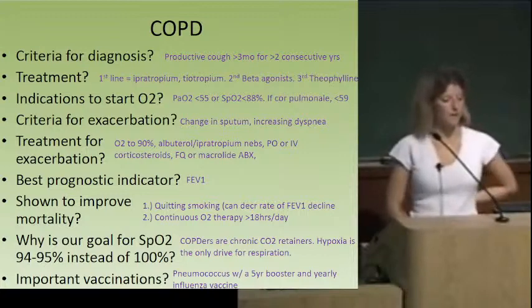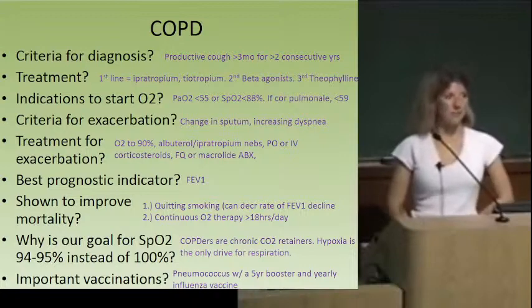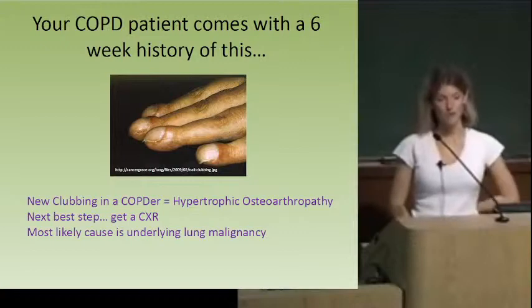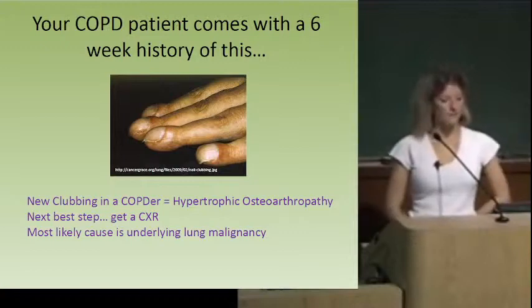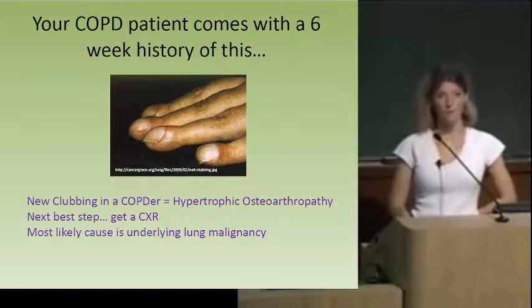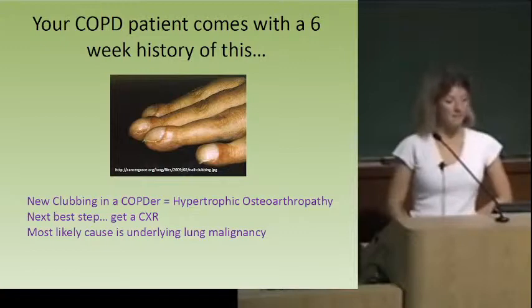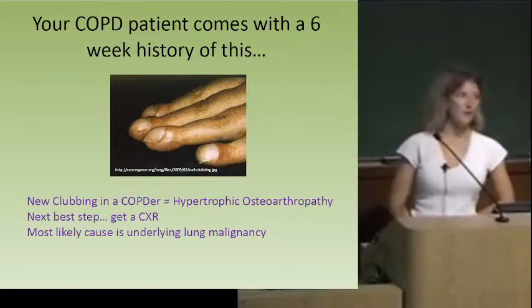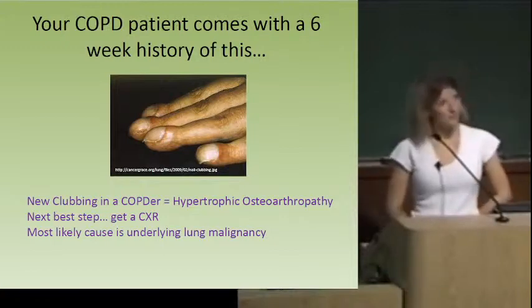If a COPD patient shows you acute onset of clubbing of the hands — hypertrophic osteoarthropathy — that means cancer. It means lung cancer. The next best test is chest x-ray, not pulse ox, not spirometry.